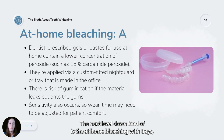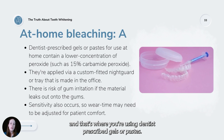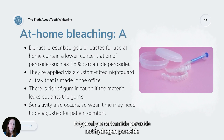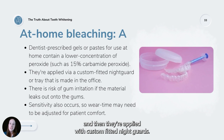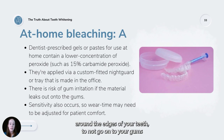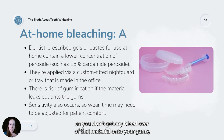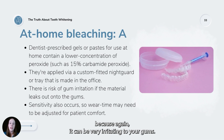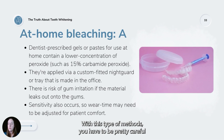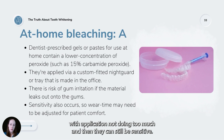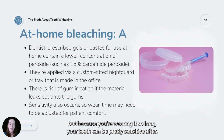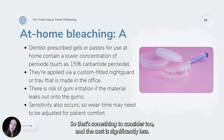At-home bleaching with dentist-prescribed trays uses gels or pastes that are typically around 15% concentration — usually carbamide peroxide, not hydrogen peroxide — applied with custom-fitted night guards shaped precisely around your teeth to avoid contact with gums. Some gel will push out with this method, so careful application is important. Teeth can still be sensitive, especially if worn overnight. Cost is significantly less than in-office bleaching.